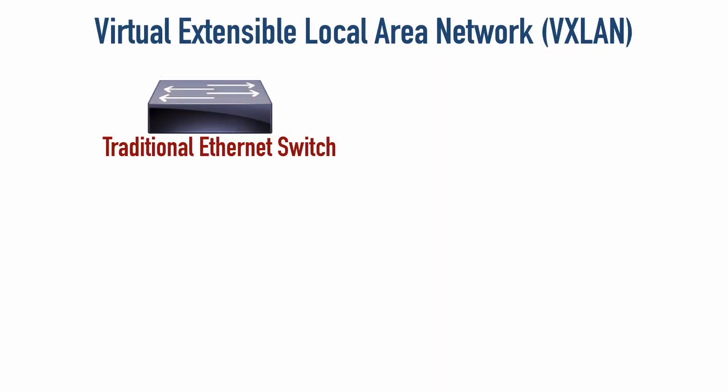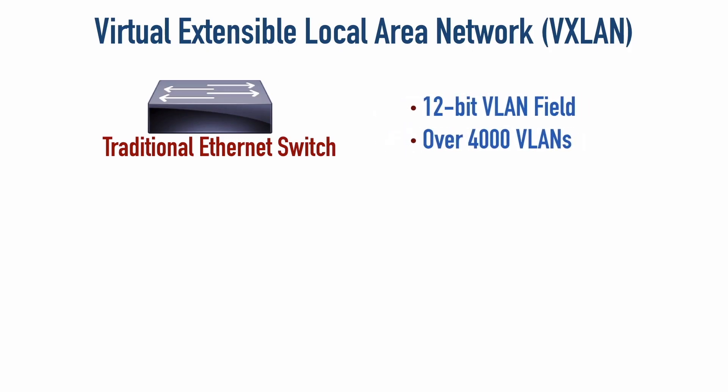With traditional Ethernet switches we can support a little over 4,000 VLANs. The reason is the VLAN field is 12 bits long, giving us just over 4,000 VLANs. But in today's networks — where we might have a data center with lots of virtualization and the need to isolate several virtual machines from other virtual machines — we could easily run out of VLANs.